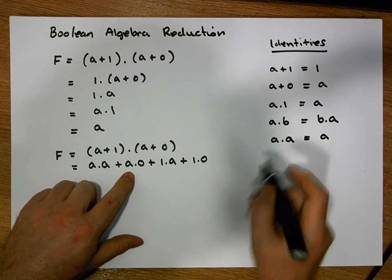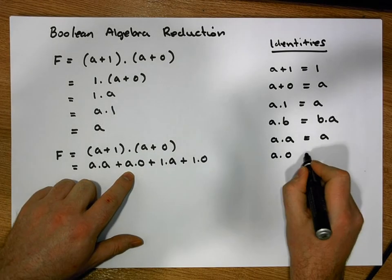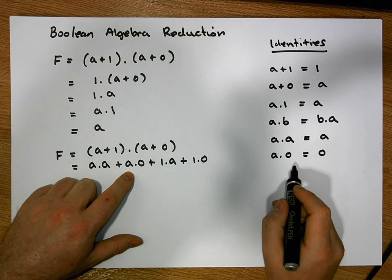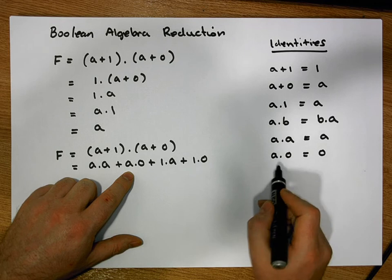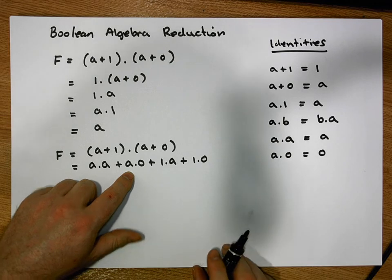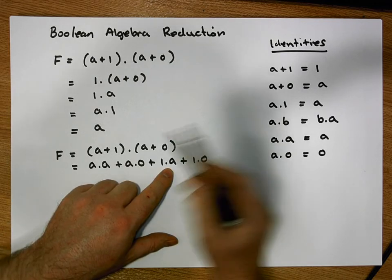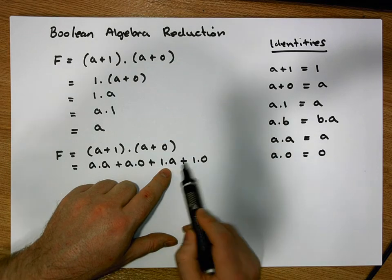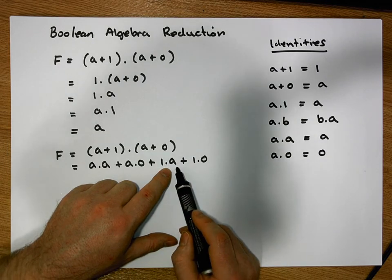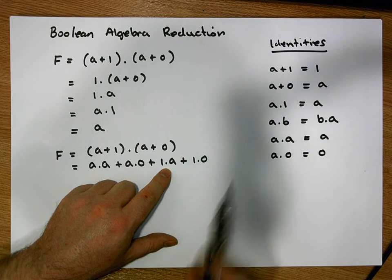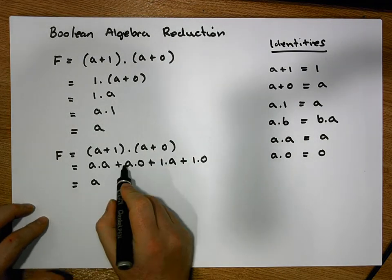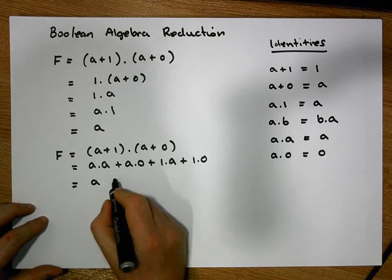We also know that a AND'd with 0 is equal to 0 — that's the Universal Bound for AND. And we already talked about how 1 AND'd with a is the same as a AND'd with 1, and a AND'd with 1 is the same as a. So a AND'd with a reduces to a, and a AND'd with 0 reduces to 0.